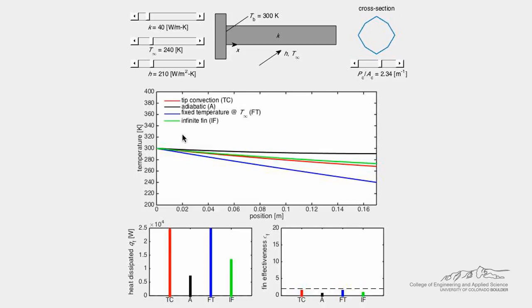The spatial temperature profiles for each tip boundary condition are shown in the top plot. The total heat dissipated by each fin and the fin effectiveness are calculated and shown visually in the lower left and lower right plots.